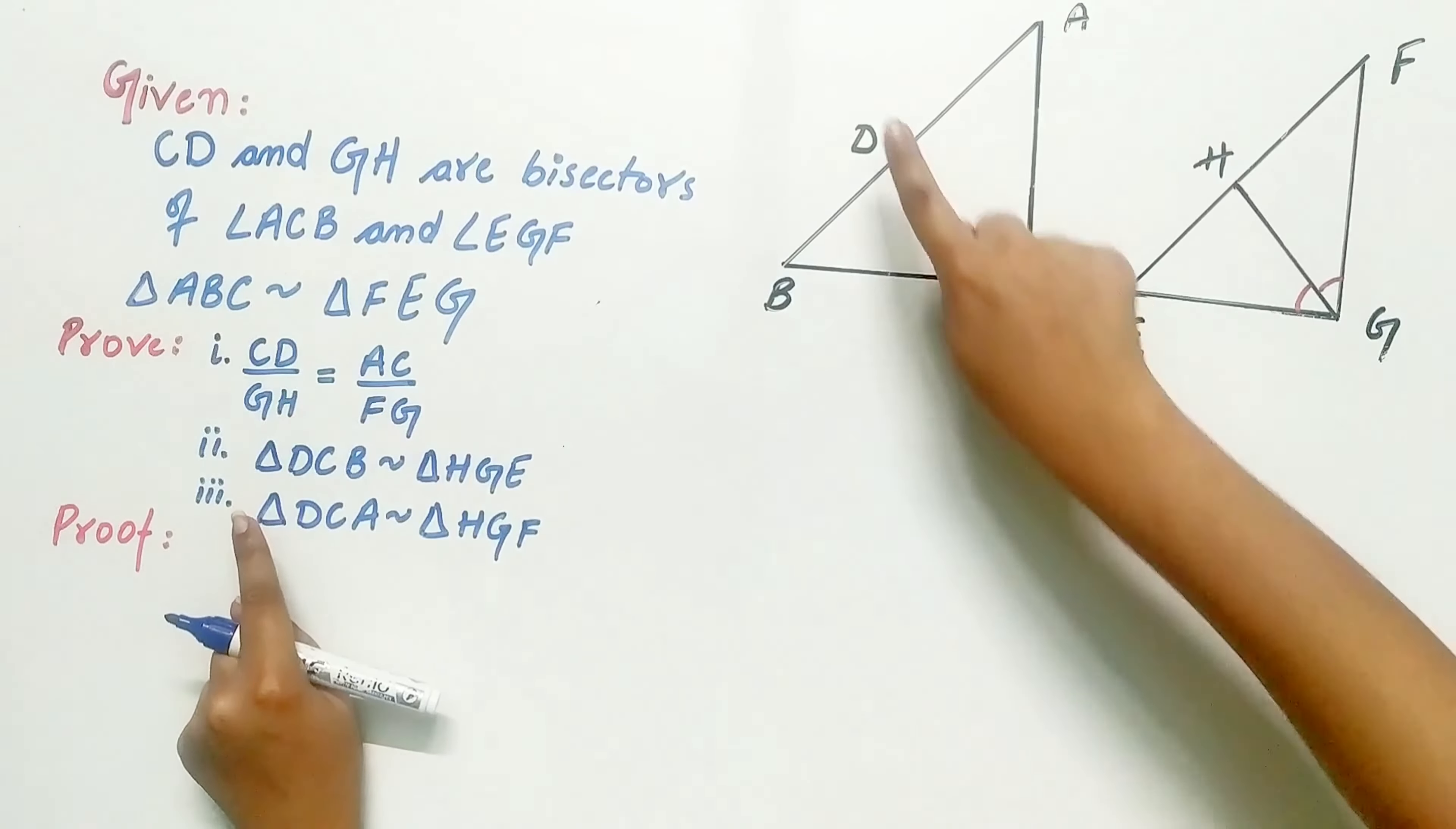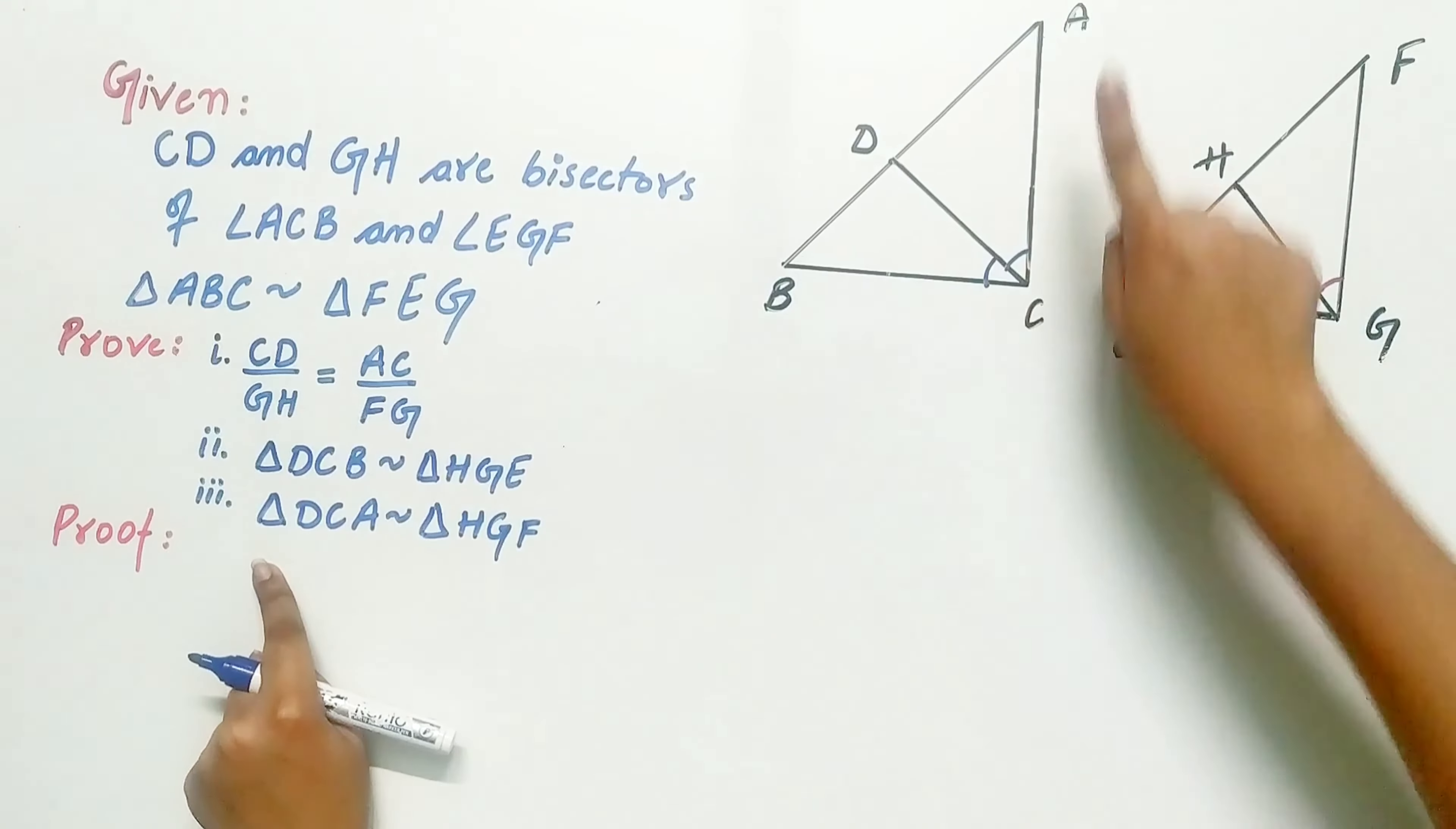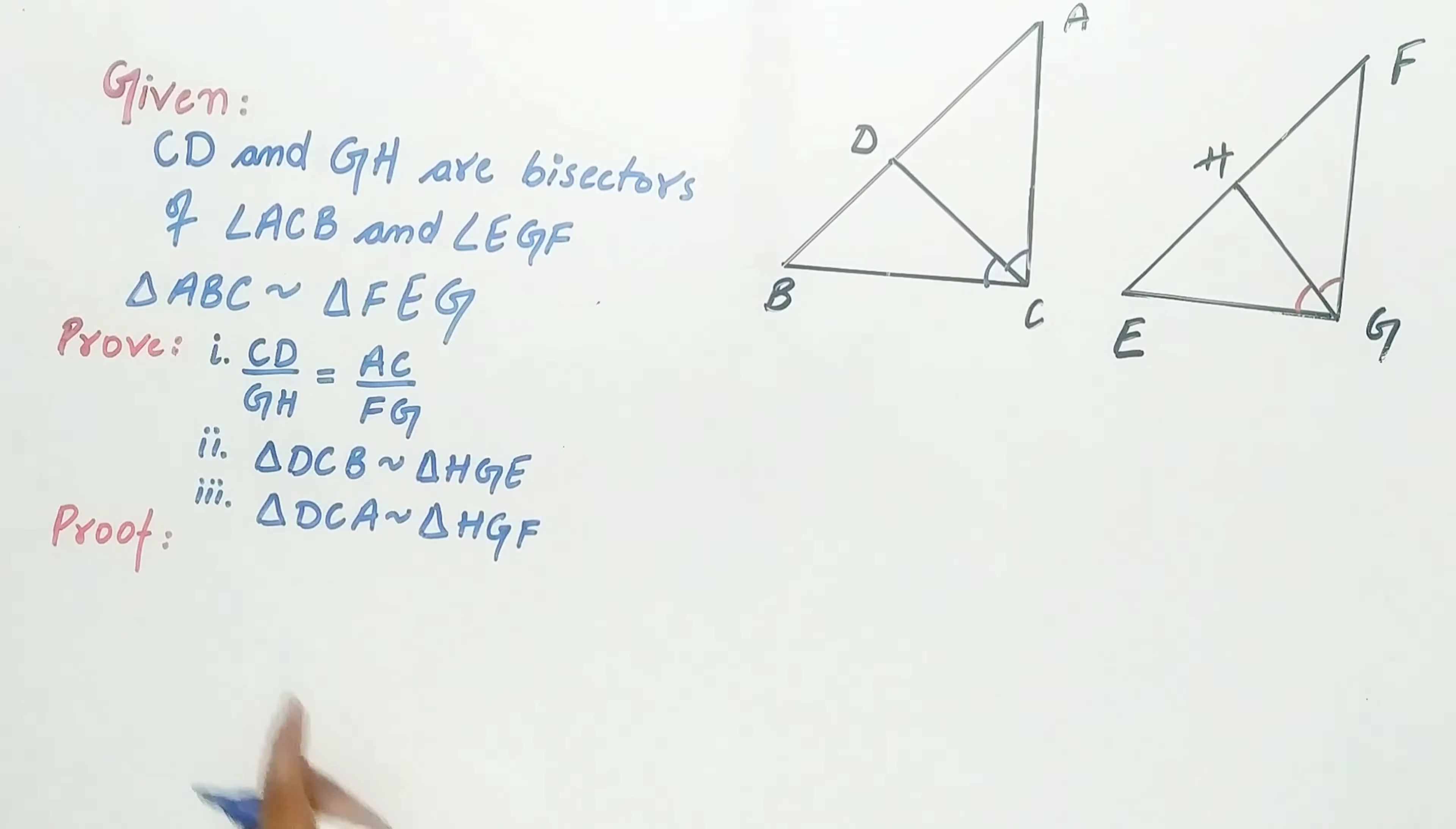Triangle DCB is similar to triangle HGE and triangle DCA is similar to triangle HGF.